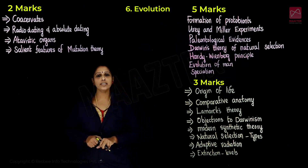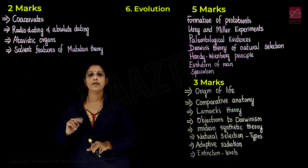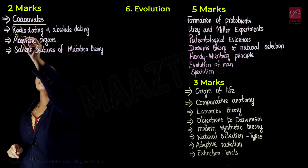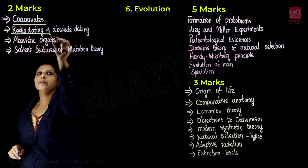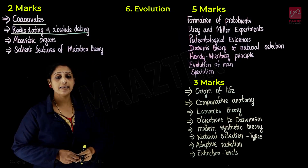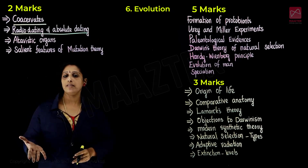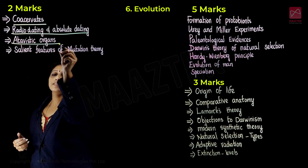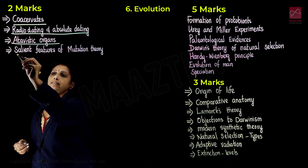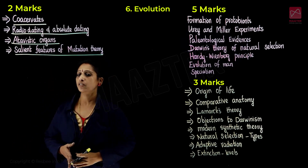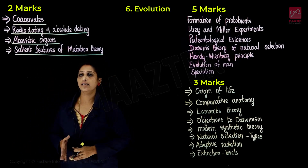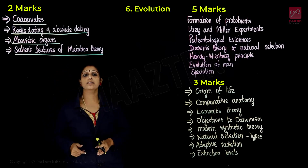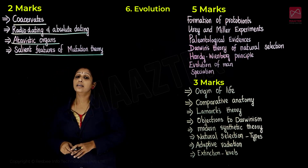Next is Evolution. From evolution, there are two important questions. Key topics include coacervates, radio dating and absolute dating, and differentiation. Then atavistic organs and salient features of mutation theory. In this section, there are two important questions. Geological time scale is also a topic — one mark and two mark questions have chances here.